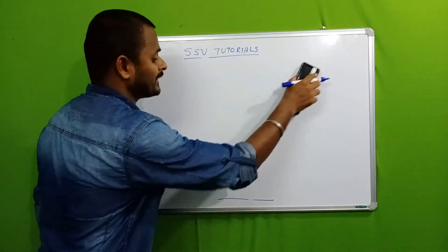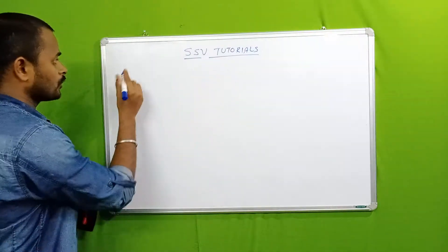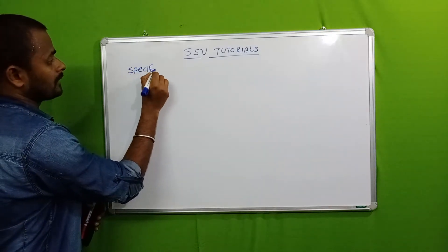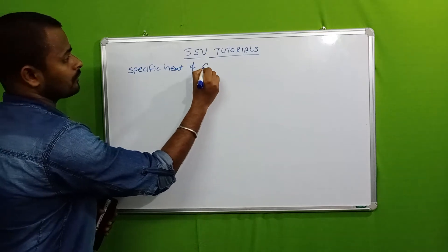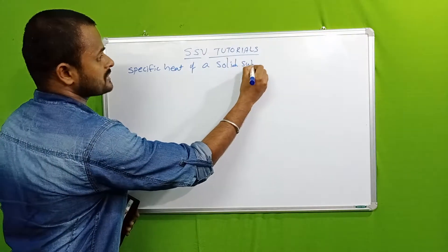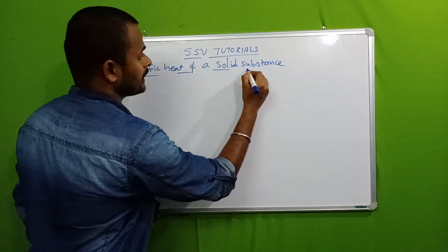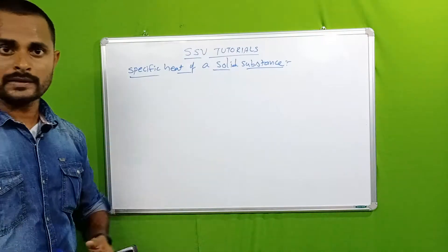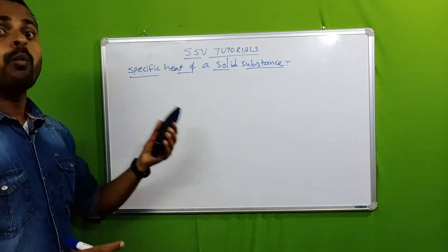By using the principle of method of mixtures, we will now derive the specific heat of a solid substance. This is a very important concept in 10th class — I think it is a 4-mark question. The experiment involves finding the specific heat of a solid substance.